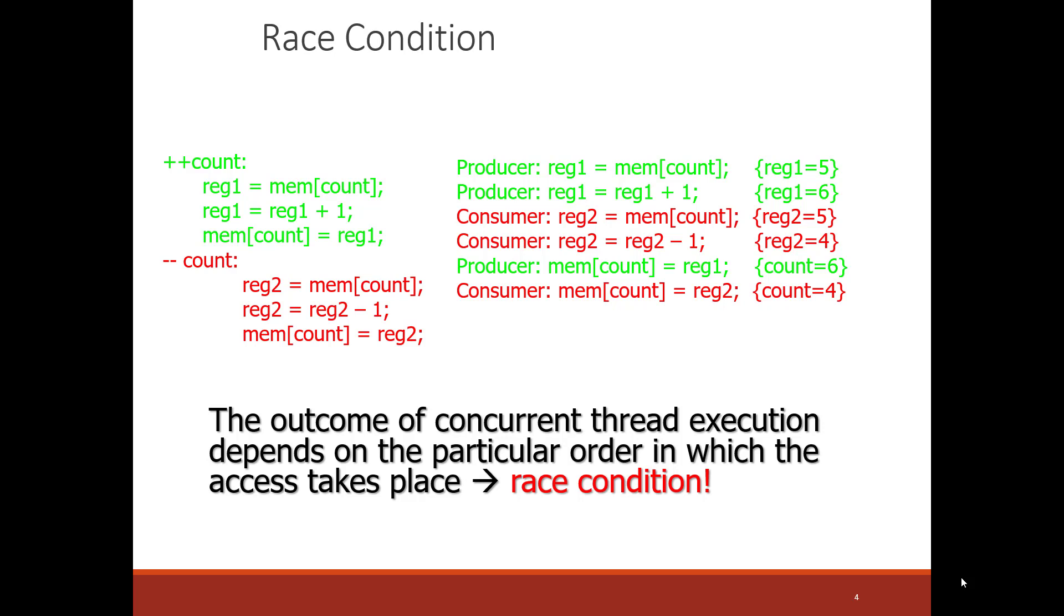Now, the thread comes to remove the item, and the memory is put into the register, the count variable is put into a register. The register is decremented, and that register is written back to memory. Again, now the value of the memory is one less. However, let's assume something else happens instead.